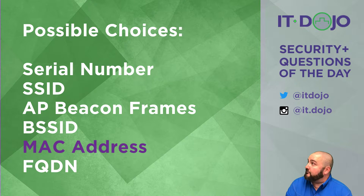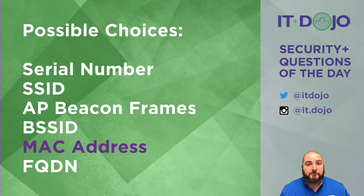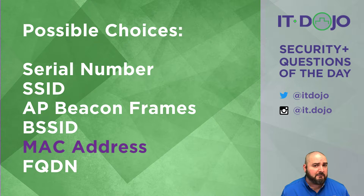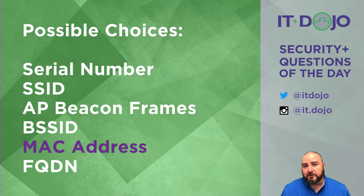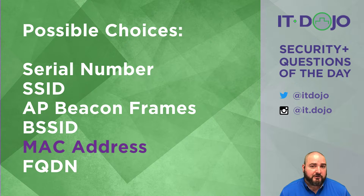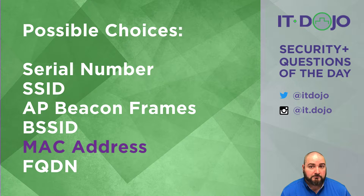The other option on the list was FQDN — fully qualified domain name. No. Devices don't include their fully qualified domain name in any of the 802.11 management or control frames being sent, so that's not going to help you find rogue devices in your network.